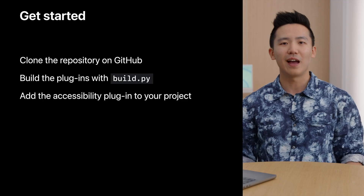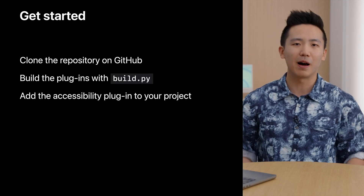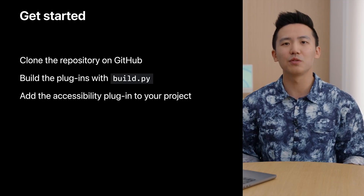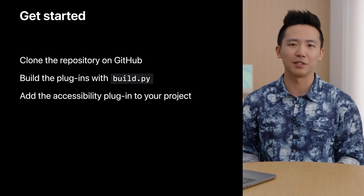To get started, clone the repository and build all of Apple's plugins using the build script in the root of the repository. This will produce a build folder that is ready for integration into your Unity projects. Finally, add the accessibility plugin to your own project using the Unity Package Manager.